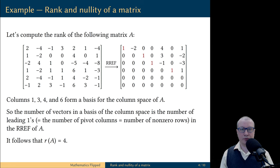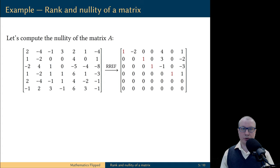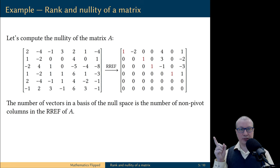To compute the nullity of the matrix A, we still look at the reduced row echelon form of the matrix A. And in the previous video, when we constructed linearly independent spanning sets for the null spaces of matrices, we observed that the number of vectors in the linearly independent spanning set for the null space, which is a basis, was equal to the number of free variables in the homogeneous linear system.